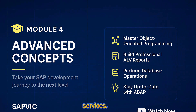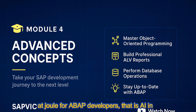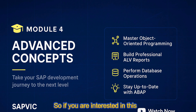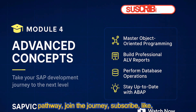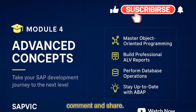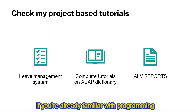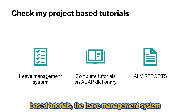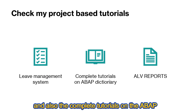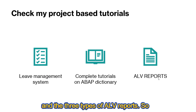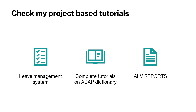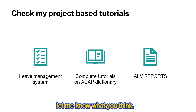After this beginner course we also move into advanced topics: CDS views and OData services — where the future of SAP development is heading — and we also look at Joule for ABAP developers, which is AI in the ABAP system. If you're interested in this pathway, join the journey: subscribe, like, comment, and share. If you're already familiar with ABAP, check out my project-based tutorials on the Leave Management System, the ABAP Dictionary, and the three types of ALV reports.